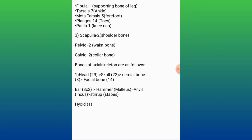The sum of bones in one leg is 30. 30 into 2 is equal to 60. 60 plus 60 is equal to 120. Scapula (shoulder bone) 2, pelvis (waist bone) 2, clavicle (collar bone) 2: 2 plus 2 plus 2 is equal to 6. 120 plus 6 is equal to 126 — the appendicular skeleton consists of 126 bones.